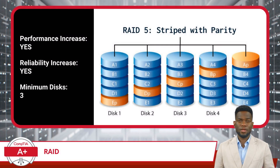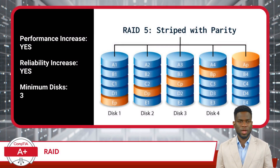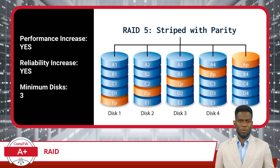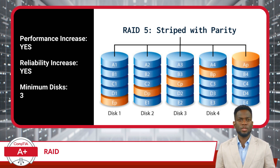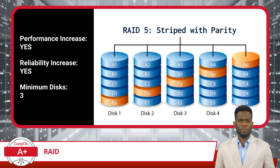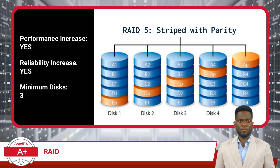Then there is RAID 5, which strikes a balance between RAID 0 and RAID 1. It employs striping, just like RAID 0, but introduces an element called Parity. Parity provides a means to reconstruct data if a single disk in the array fails or becomes degraded. This RAID level offers a bit of both performance and redundancy, but does require a minimum of three drives to configure.